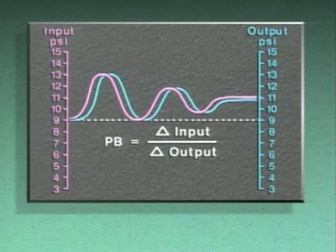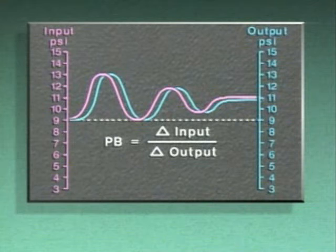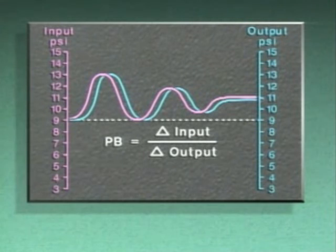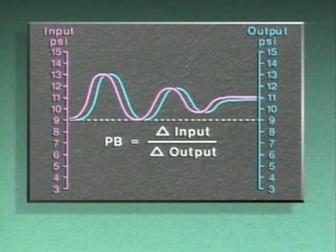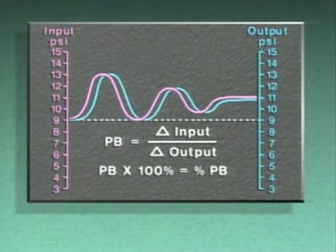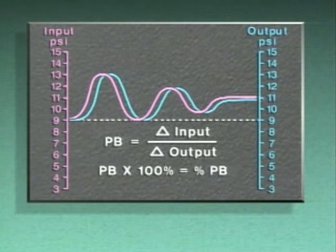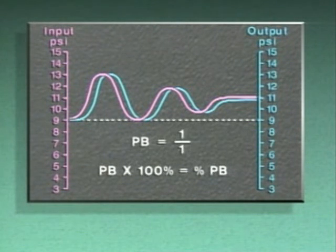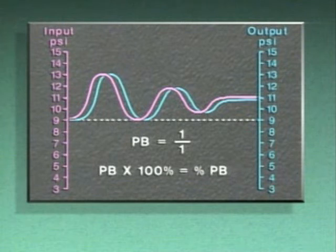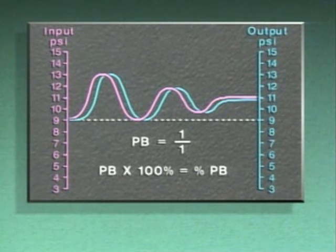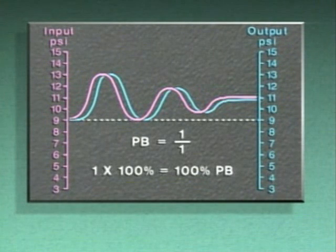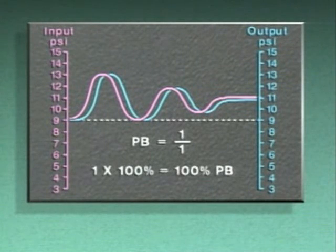Proportional band is the amount of output change, or delta output, in relation to a given amount of input change, or delta input. The proportional band value is usually multiplied by 100% so that it can be expressed as a percentage. When a controller's input change and output change are equal, the relationship between the signals is one to one, and the proportional band is 100%. This condition is called a 100% PB.